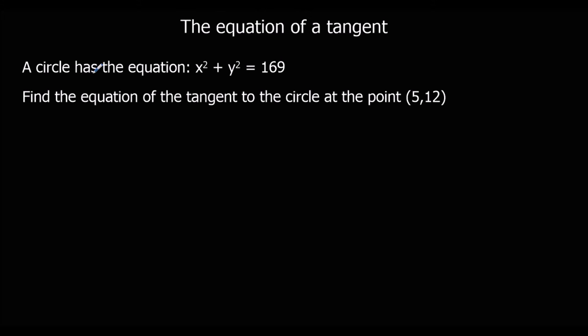Another question. We've got a circle with the equation x squared plus y squared equals 169. We know the centre is (0, 0) and its radius is square root of 169, which is 13. Find the equation of the tangent to the circle at the point (5, 12). We're going to do the same thing again: find the gradient of the radius, then do the negative reciprocal to find the gradient of the tangent, because the tangent meets a radius at a 90 degree angle.